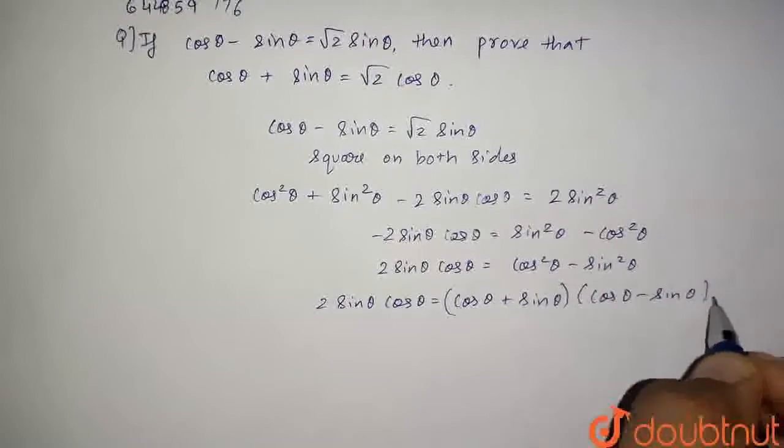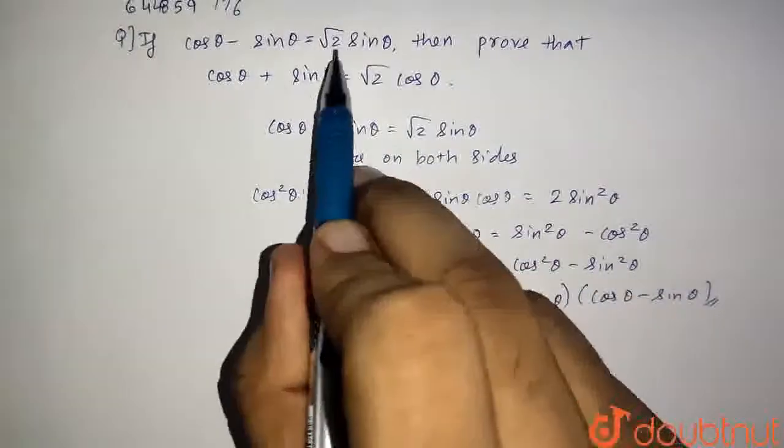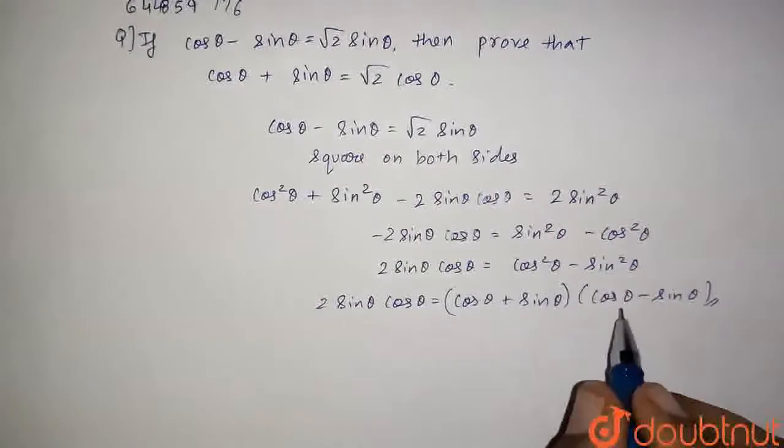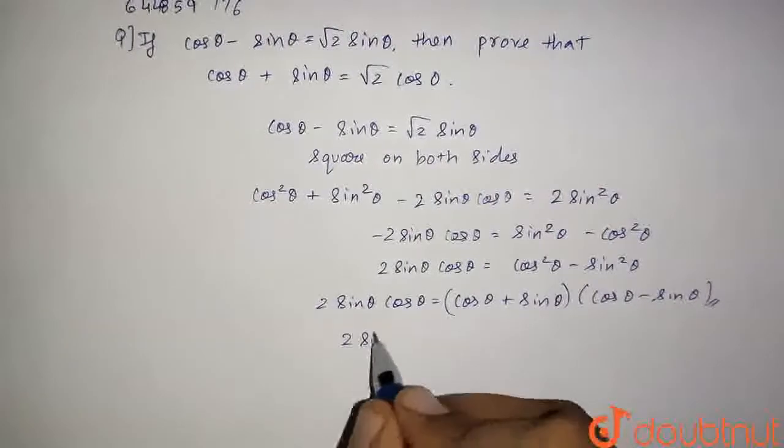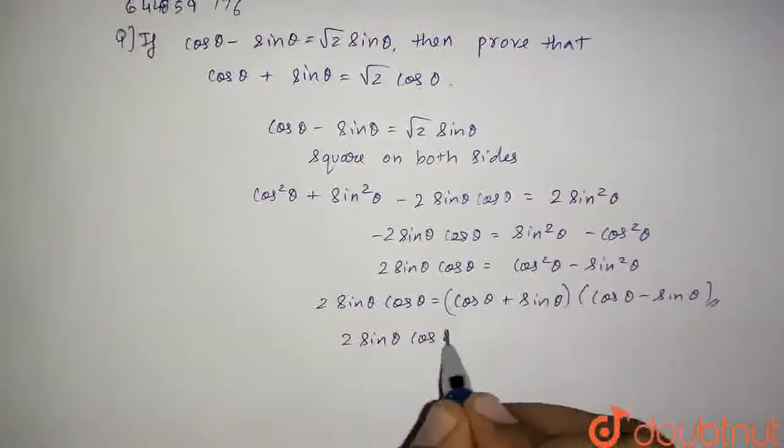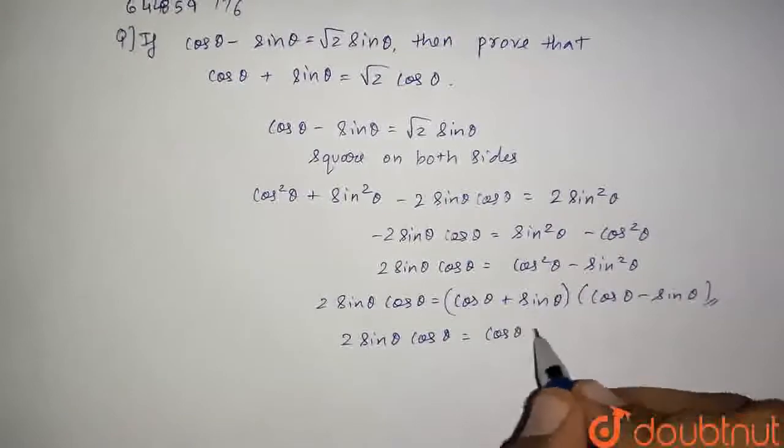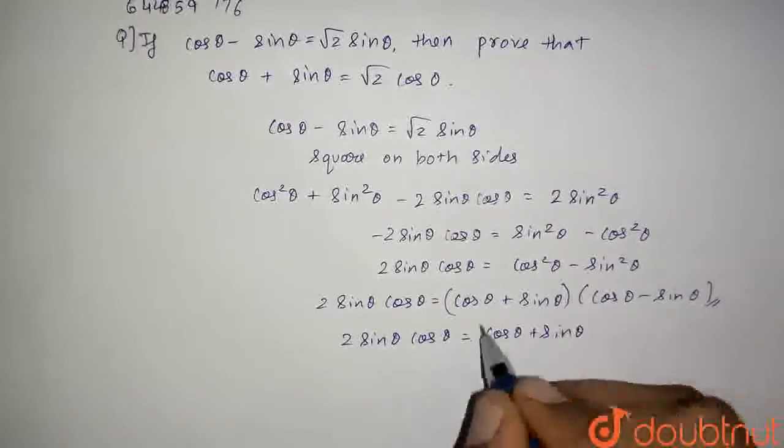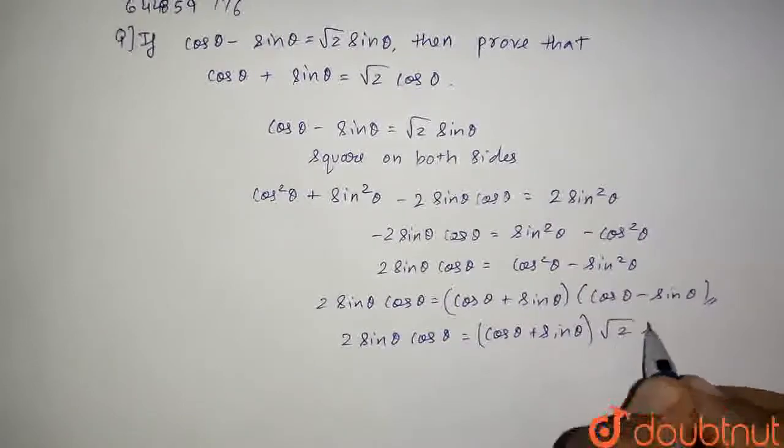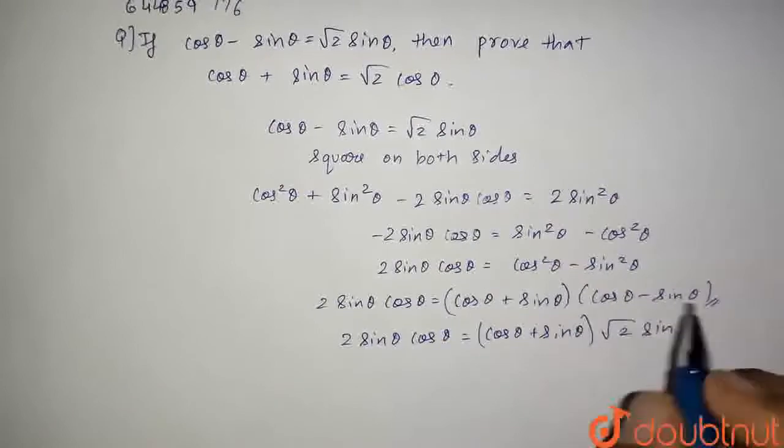Now, the value of cos θ minus sin θ is given in the question as root 2 sin θ, so we will put here root 2 sin θ. So we will get 2 sin θ cos θ is equal to (cos θ + sin θ) into root 2 sin θ, which is given.